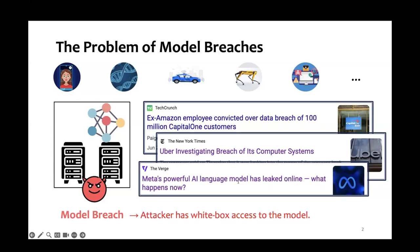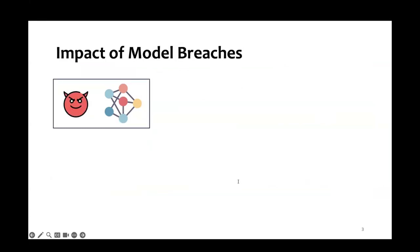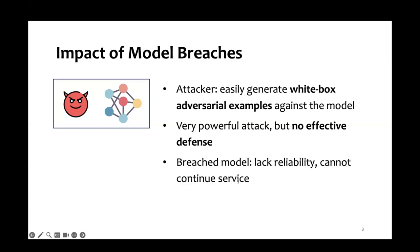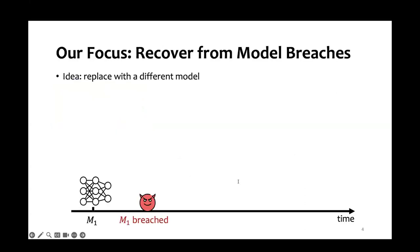Once the model is breached, the attacker has white-box access to the model. In this case, the attacker can easily generate white-box adversarial examples against the model. This is a very powerful type of attack, and it's very hard to defend against. Since the model now has misclassification, it lacks reliability and should not continue service. So we need a way to recover from such a loss.